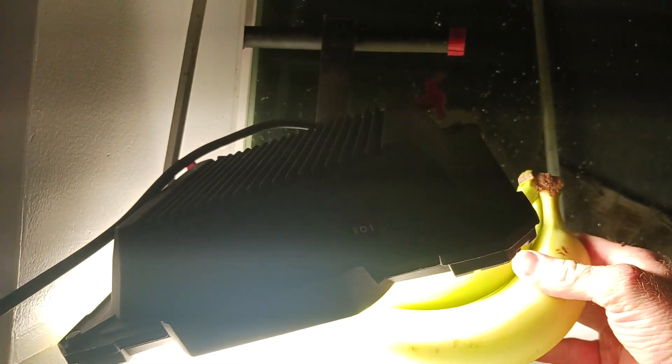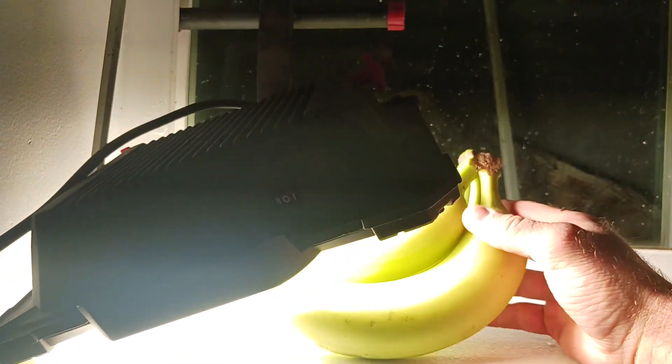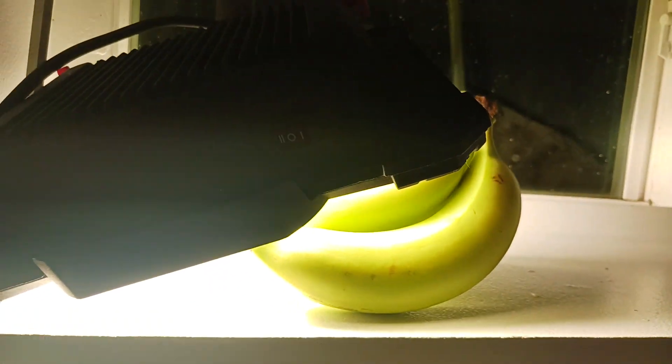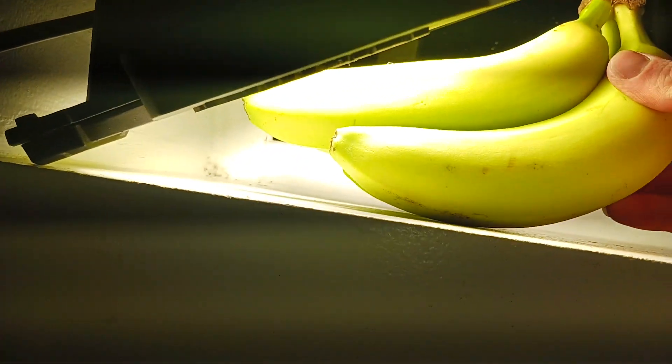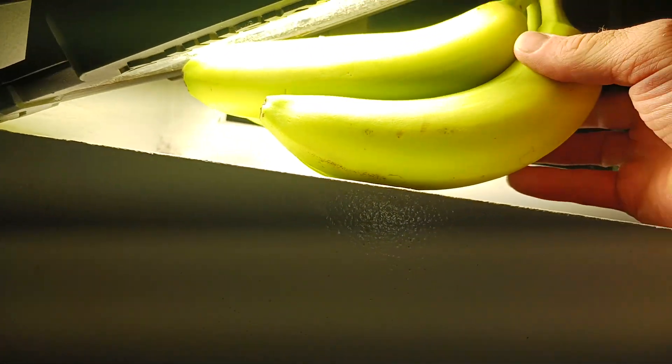Instead of putting them in the sun, like if it's winter time, then you could just put them under a work light. Just make sure they're all the way under so they'll actually turn ripe.